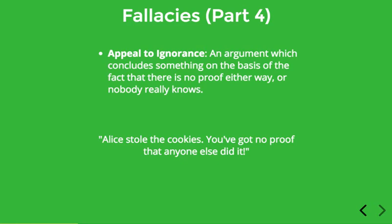So for instance, suppose we're trying to debate about who stole the cookies that were lying on the counter, and someone says Alice stole the cookies — you've got no proof that anyone else did it. Now this is a fallacy because the lack of evidence against your conclusion doesn't necessarily make it true. Maybe there's no proof or evidence at all about who stole the cookies. Still, you can't leap to the conclusion that it was Alice just because we can't prove that it was Bob or Carol or Dave.